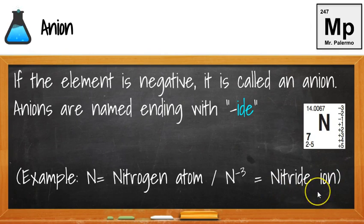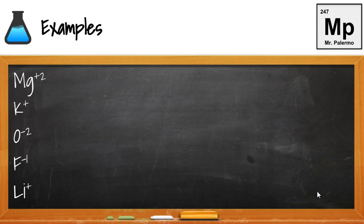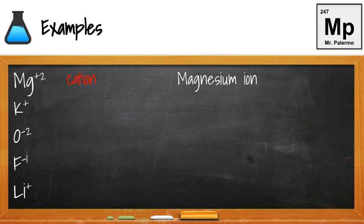Let's see some examples. We're going to determine if it's an anion or a cation, and then name it. Mg plus 2 is positive, so that's a cation — the T forms the plus sign. We look up Mg on the reference table: that's magnesium, so we'd write magnesium ion. K plus is also a cation. Taking the full name, K is potassium, so that's the potassium ion.